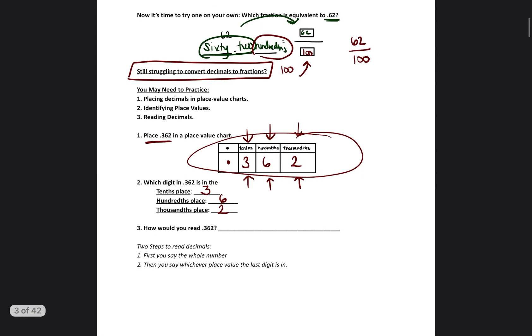So how would you read 0.362? Well, when you're reading a decimal, the steps are right underneath. First, you say the whole number. So we would say 362. And then you say whichever place value the last digit is in. So the last digit is in the thousandths place. So we would say thousandths.